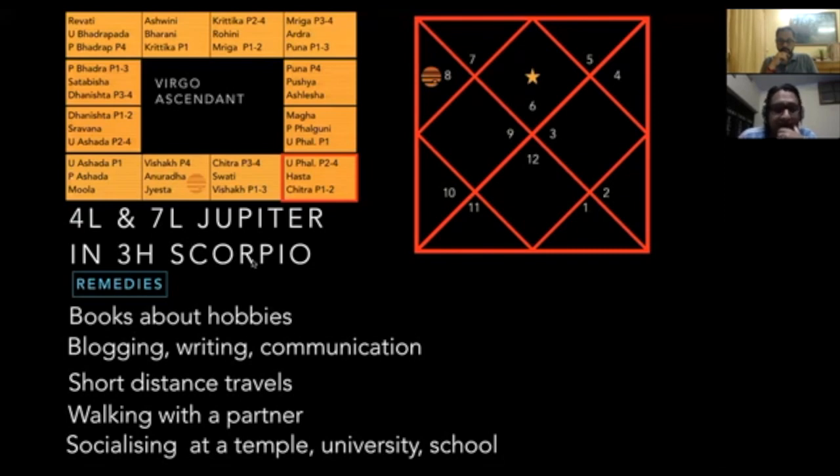One more thing I would add is because Jupiter is the seventh lord and Jupiter will be aspecting the seventh house for the Virgo ascendant, definitely socializing at a temple, especially in a university or school. Perhaps there might be these alumni meetings which you might be attending with your old school alumni or something like that. All that is also possible here with Virgos.